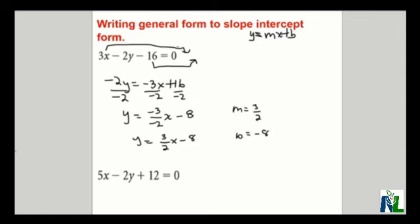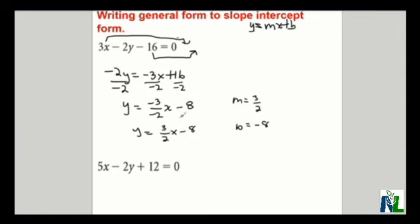If you wish, you could pause the clip and try the next one. Once again, I'm going to leave y where it is, the y term, and put the other terms on the right side of the equation. This will give us negative 2y is equal to negative 5x, subtract 12.